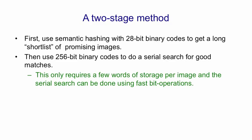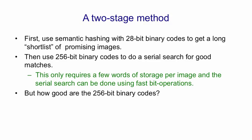Even a 256-bit binary code only requires four words of memory per image. And even though we're then going to do a serial search on these binary codes, the search can be done very fast because it only requires a few operations to compare two 256-bit binary codes to find out how many bits they have in common. The question is, how good is a binary code of that size at retrieving images? Are they going to find images that we think of as being similar?